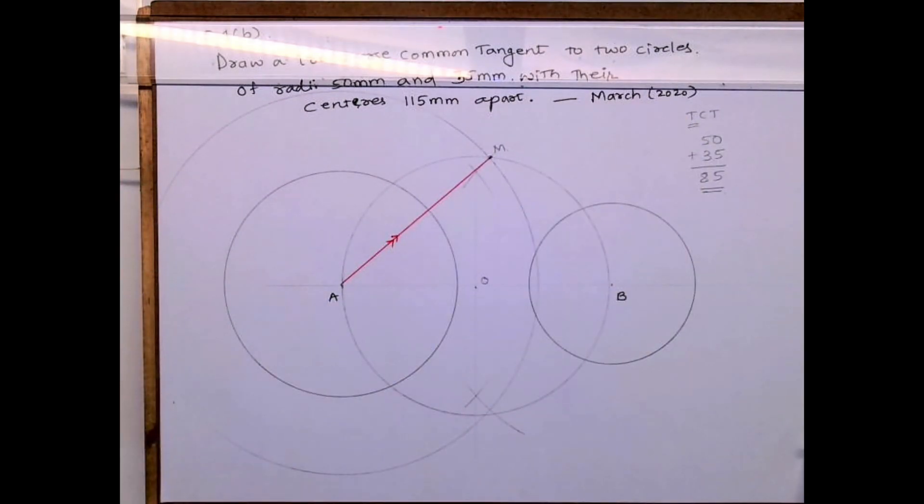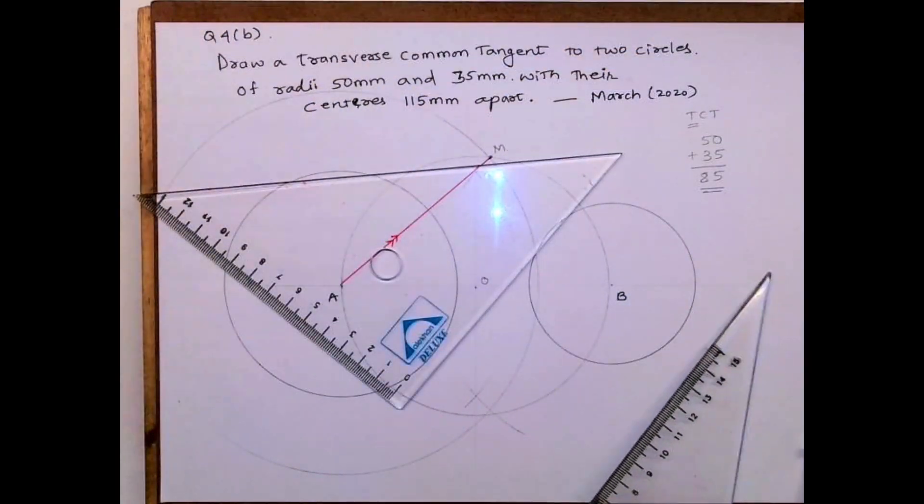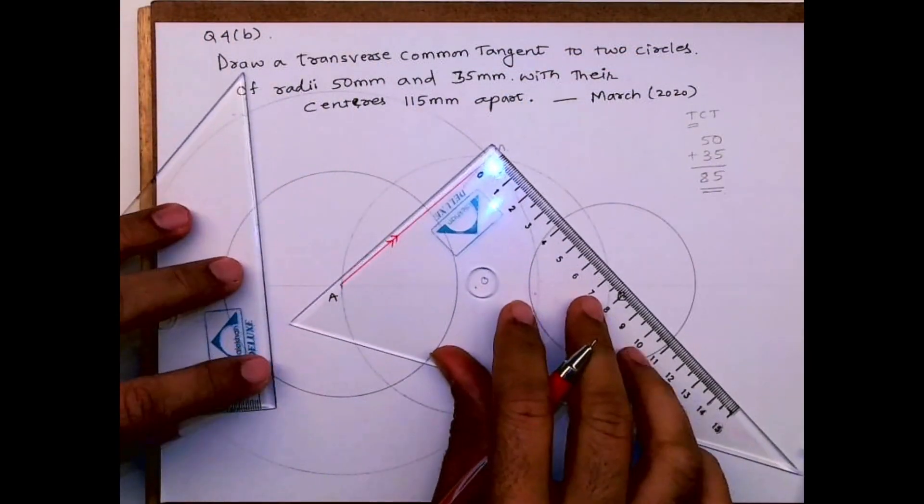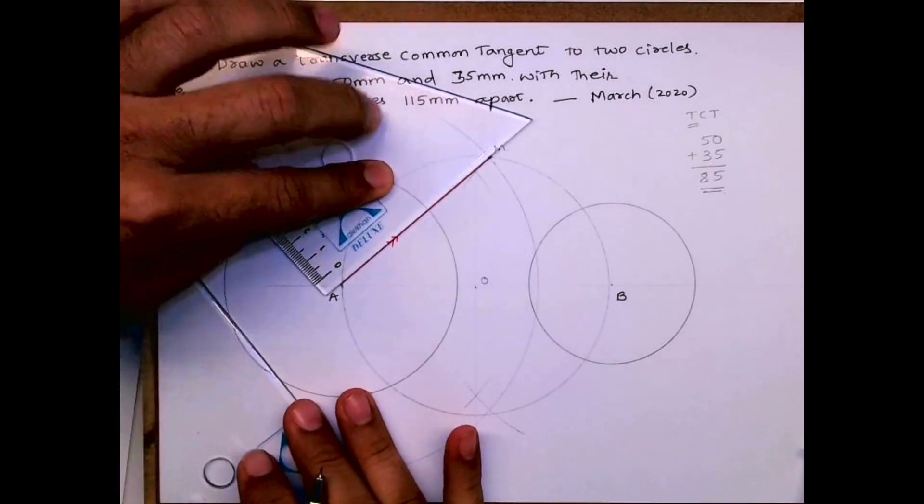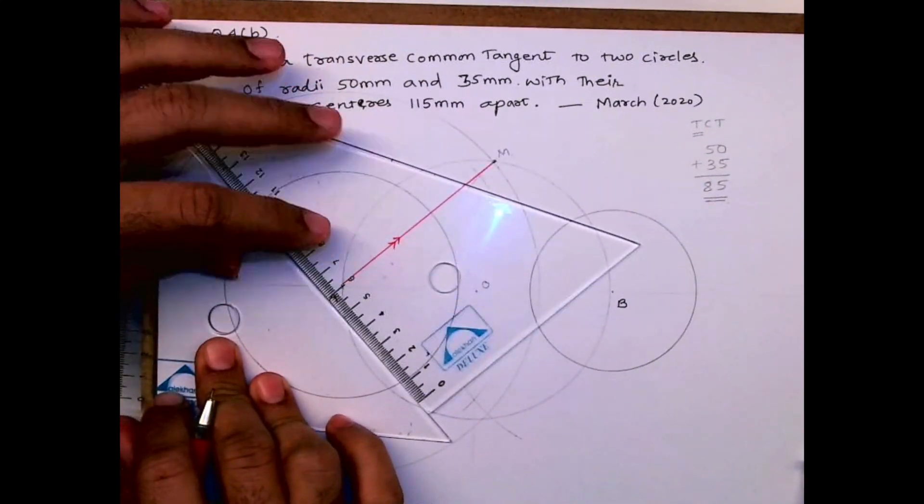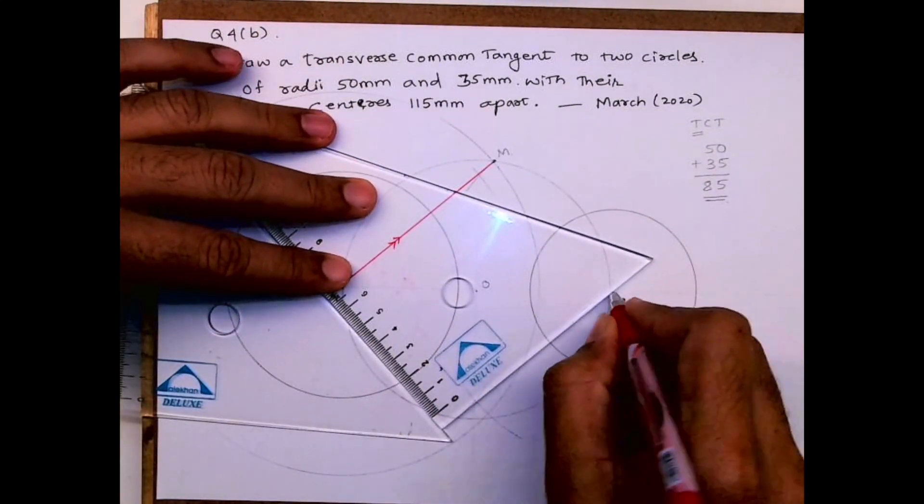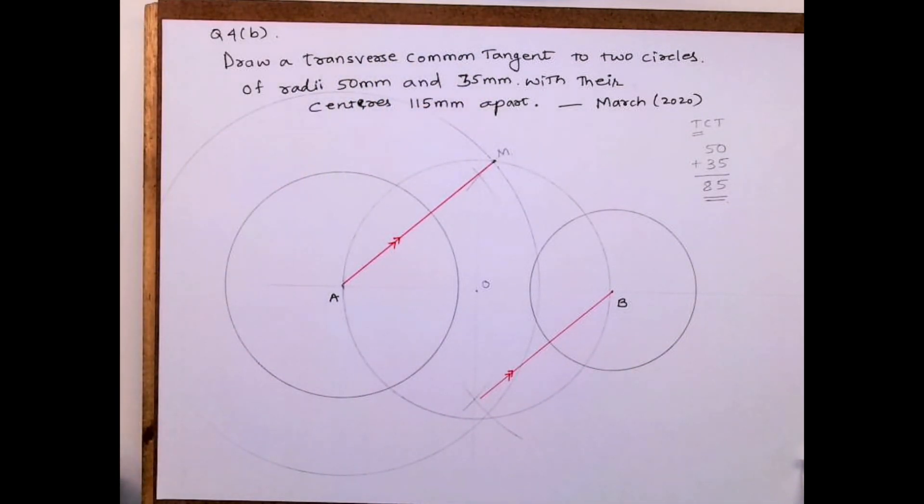Now what I will do, I will draw a parallel line. See, line is like this. You keep another set square down like this and then you slide. So this is how you'll get parallel line.